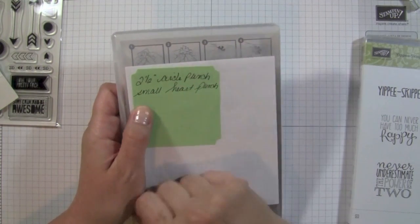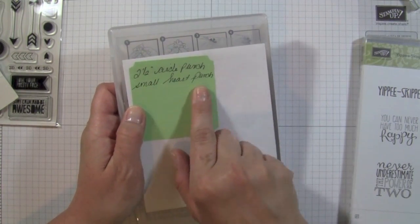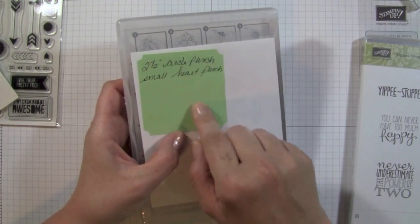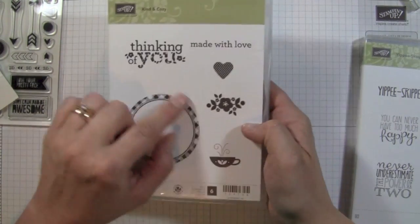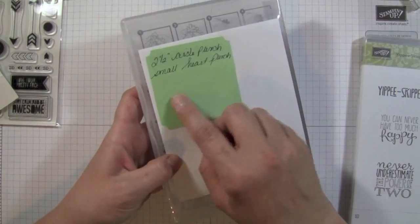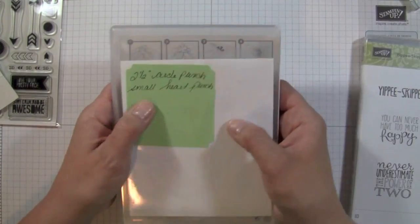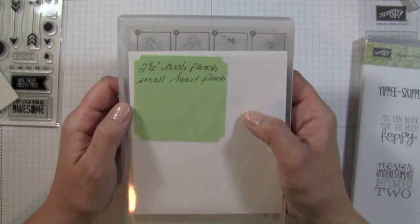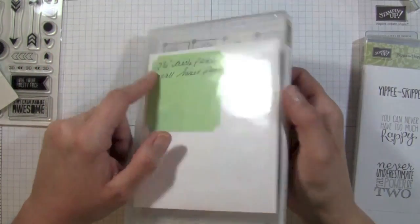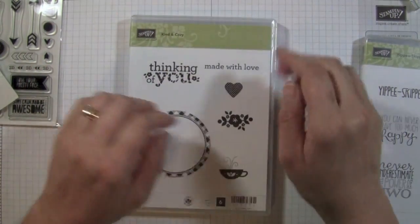So the 2.5-inch circle punch works with this, but I found that the small heart punch works with this. And then if I come across any other die shapes that might coordinate or work with the sentiments, I can write them on here too, so I always have a couple of options when I pull out the stamp set. I could say, oh, I need my 2.5-inch circle punch because I'm going to use this die right here if I want to use it.